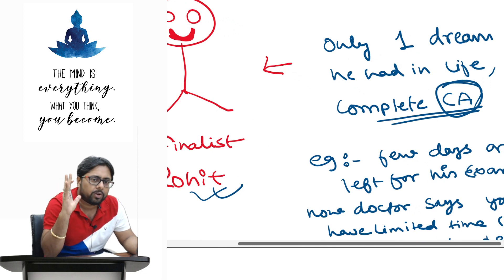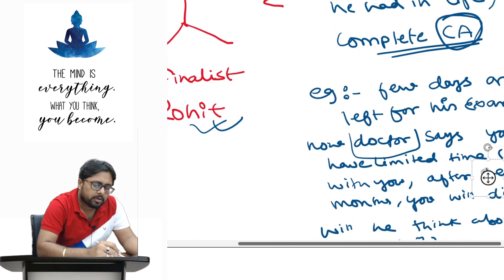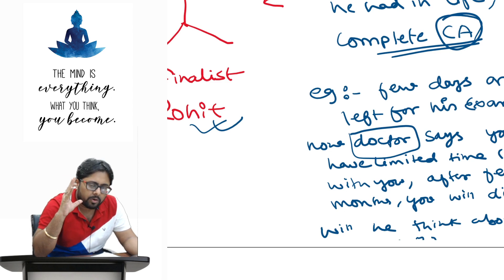But just to explain you, I am telling you, say doctor told Mr. Rohit, after few months, say after two, three months, you won't be anymore. Just last three months are left. And after that, you won't be there anymore. It means you will die.